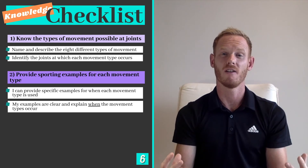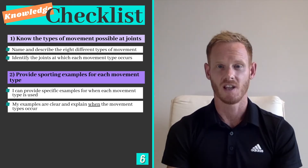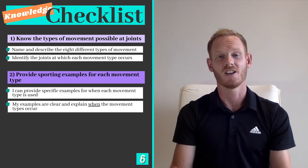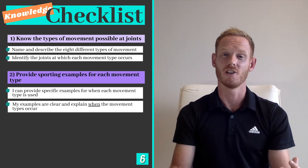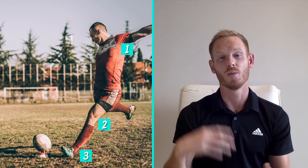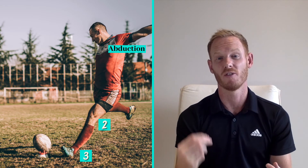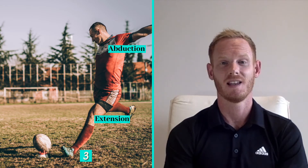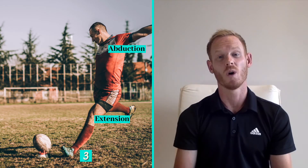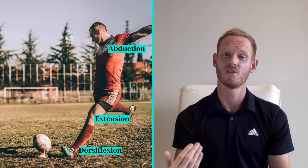Now we've covered all the information you need for your final exam. Pause the video to identify the types of movement occurring at joints 1, 2, and 3 as the rugby player kicks the ball. At point 1, the rugby player has abducted their arm to the side to provide balance when striking the ball. Extension has occurred at the knee joint of the standing leg to provide stability, while dorsiflexion can be seen at the ankle joint as the toes are pointing upwards towards the shin.